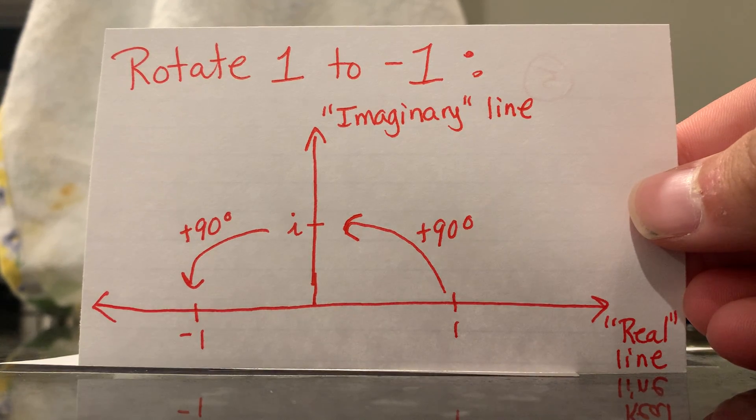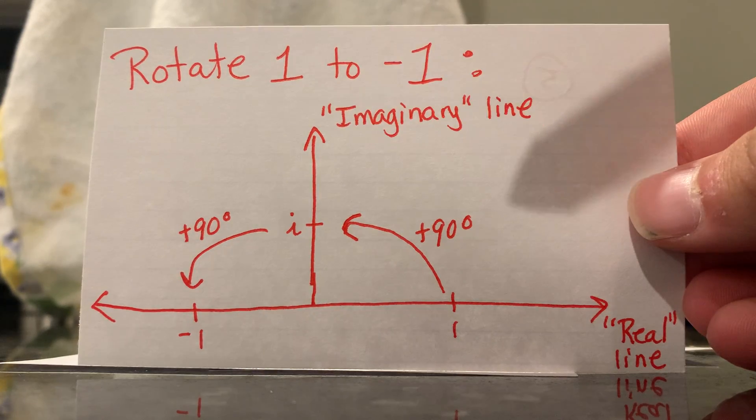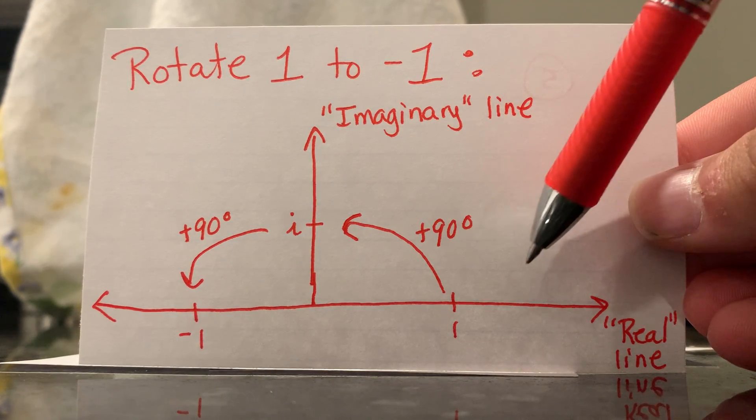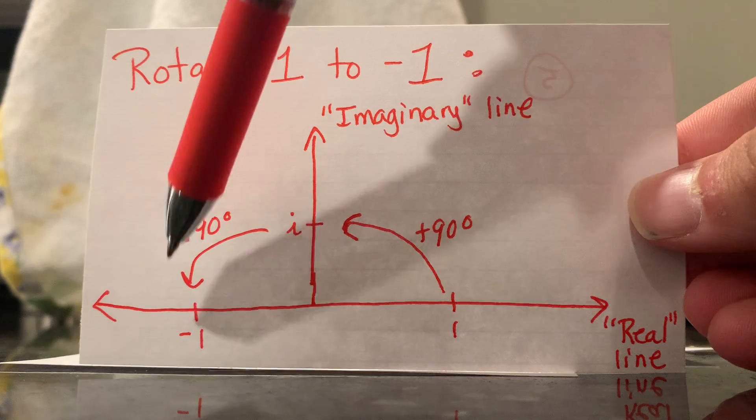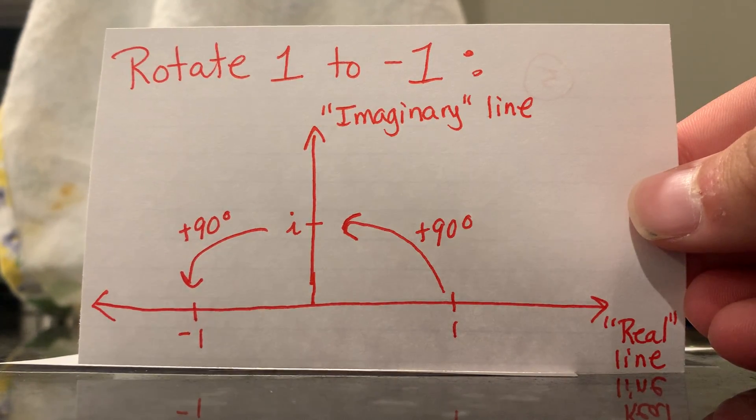As you can see here, we have our imaginary line i, and then our plus 90 degrees and plus 90 degrees. It goes, as you can see, from one to negative one. Makes sense.